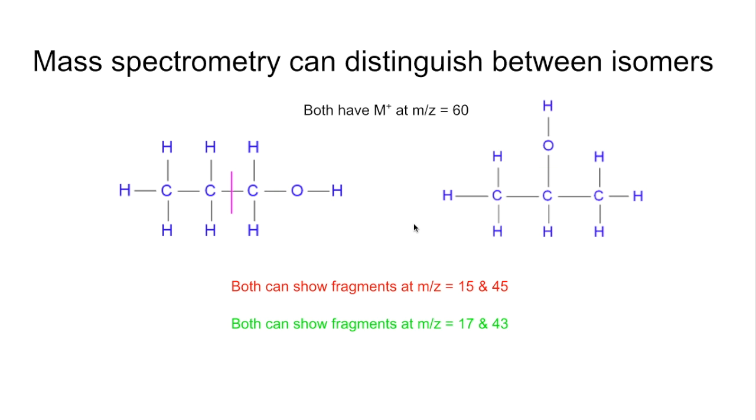However, only propane-1-ol can break a bond like this and generate fragments at M/Z 29. So this part here, if it carries a positive charge, would have an M/Z 29. And likewise, if the positive charge went here, you've got CH2OH and that's at 31. So this can't create those fragments. So that's how you could distinguish between the two isomers from the spectra.